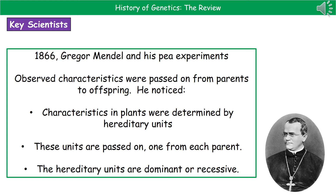The first one — the guy known as the father of genetics — is Gregor Mendel. We've got to go back to 1866 to look at his work. He was actually a monk and he spent his time in his monastery working in the gardens with peas. When he was working with those peas, he actually observed that characteristics were passed from the parents to the offspring.